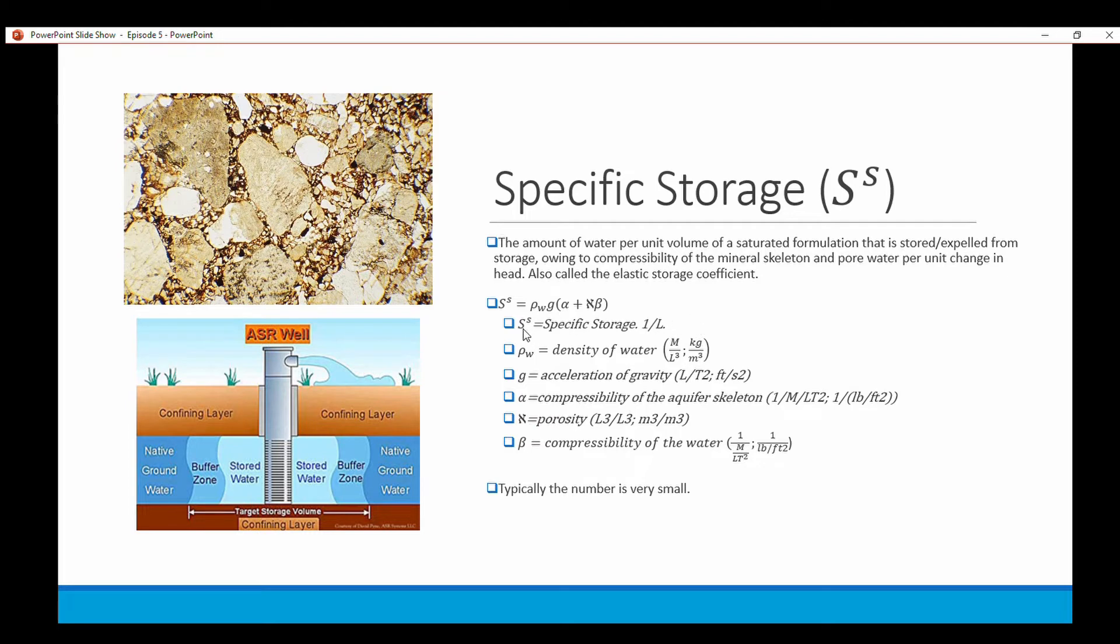You have the density of water, which is 1000 kilograms per meter cubed, that's a constant. And then g is the acceleration of gravity, that's another constant, that's 9.81 meters per second squared.